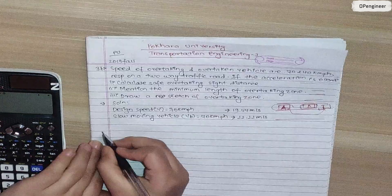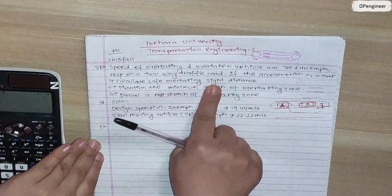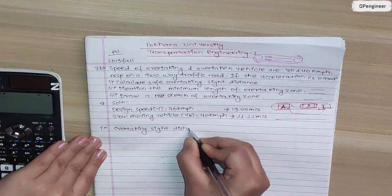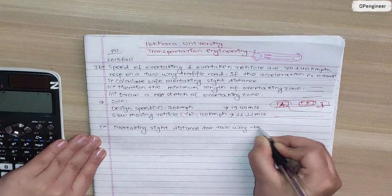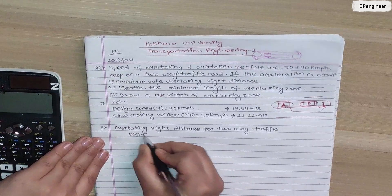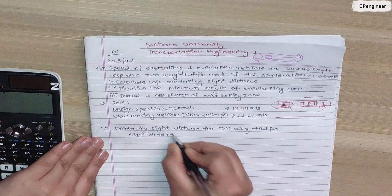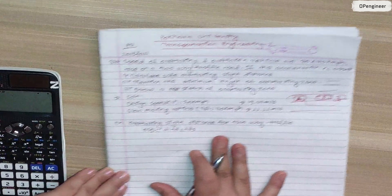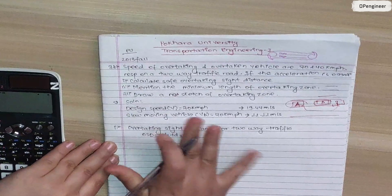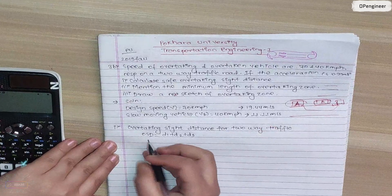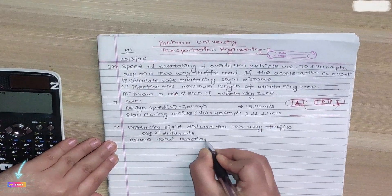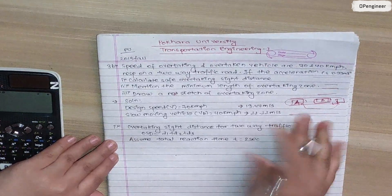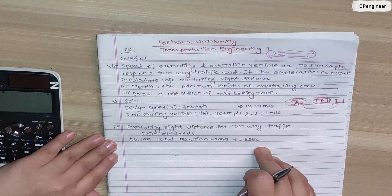We will start by calculating the safe overtaking side distance. For two-way traffic, the overtaking side distance consists of d1, d2, and d3. We will calculate each component. We assume the total reaction time t equals 2 seconds.